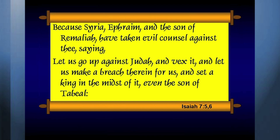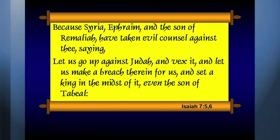I'm reading from Isaiah. In Isaiah chapter 7, verses 5 and 6, Isaiah says: 'Because Syria, Ephraim, and the son of Ramalia have taken evil counsel against thee, saying, Let us go up against Judah and vex it, and let us make a breach therein for us, and set a king in the midst of it, even the son of Tabeel.'